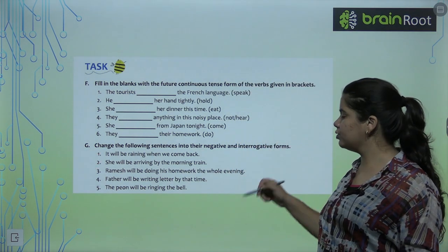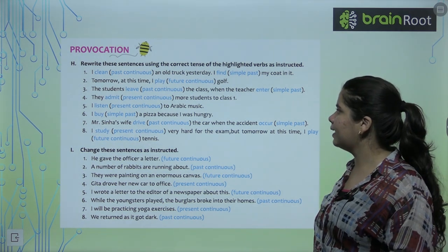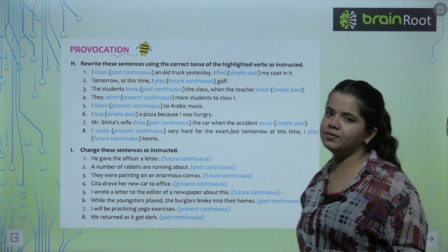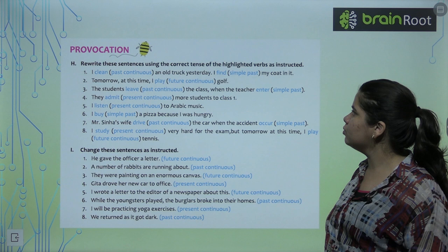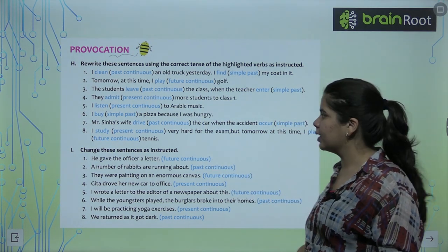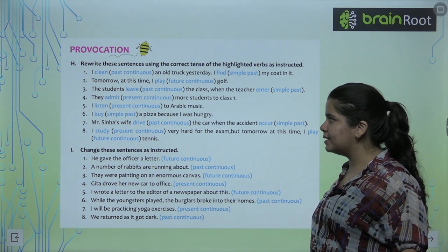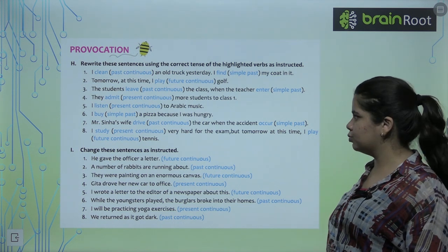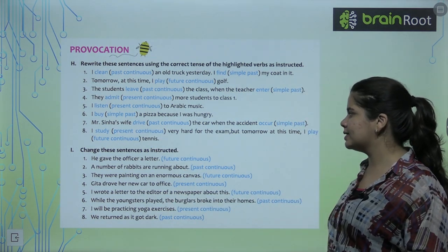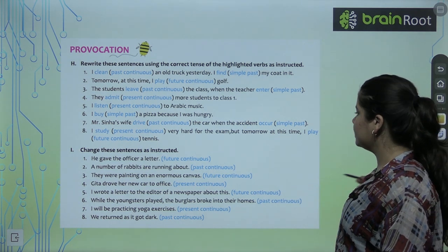Change the following sentences into negative and interrogative forms. First, it will be raining when we come back. So interrogative, how will we make it? Will it be raining when we come back? Negative, how will we make it? It will not be raining when we come back. She will be arriving by the morning train. Will she be arriving by the morning train? That is our interrogative. Negative, how will we make it? She will not be arriving by the morning train. I hope this is clear. Last three, third, fourth and fifth are your homework. Please try yourself.